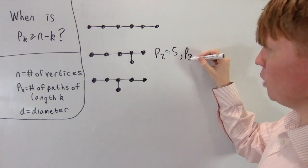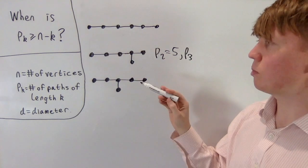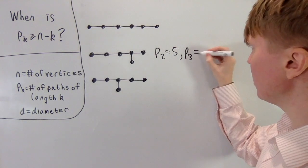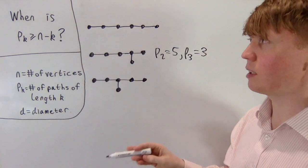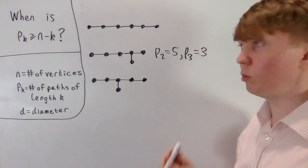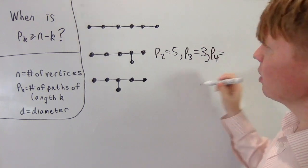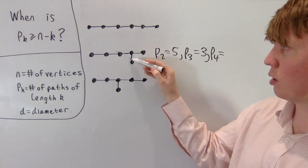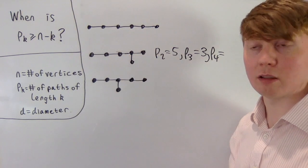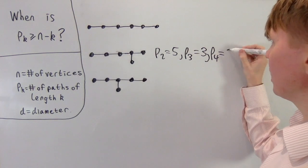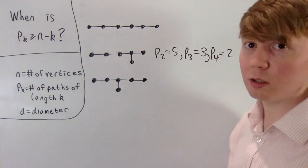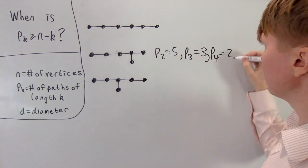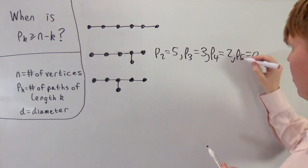For p3, there are 2 paths as part of the main path and another one using the vertex at the bottom, giving p3 = 3, which equals n−k = 6−3. For p4, there's 1 path in the top row plus a second path of length 4 using that vertex, so p4 = 2 — still just about works. However, p5 = 0, so this doesn't satisfy n−k for k=5.